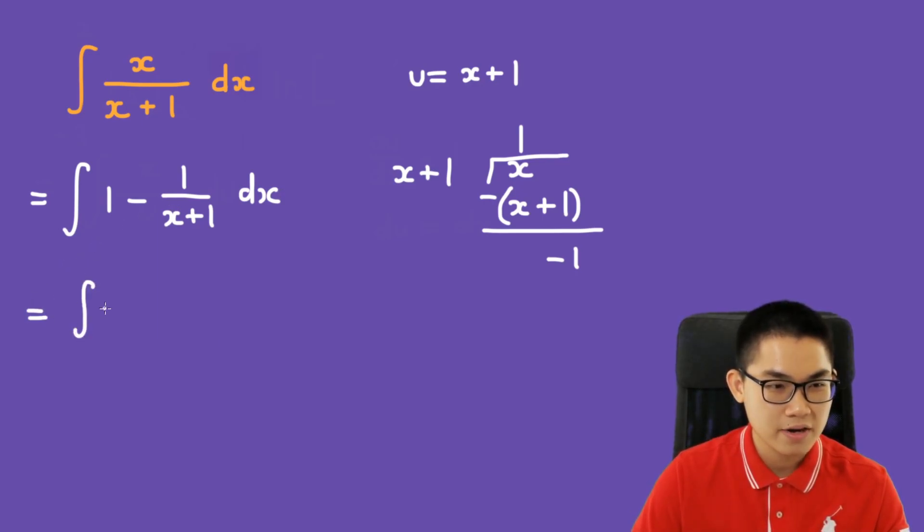And now we can split the integral apart so we get 1 dx minus 1 over x plus 1 dx. So let u equal to x plus 1.